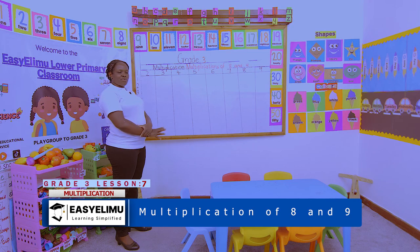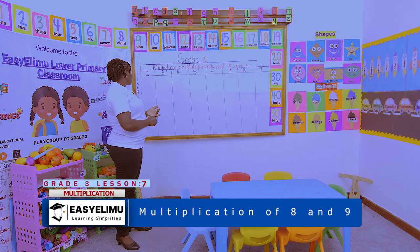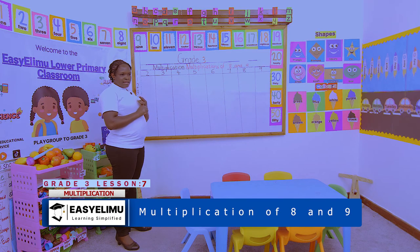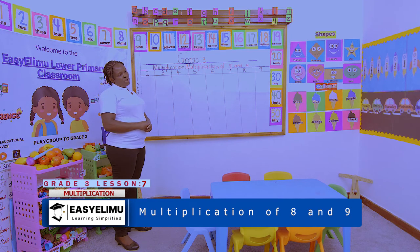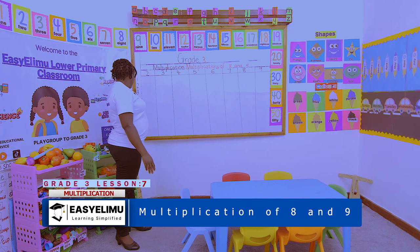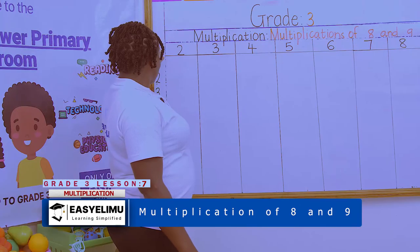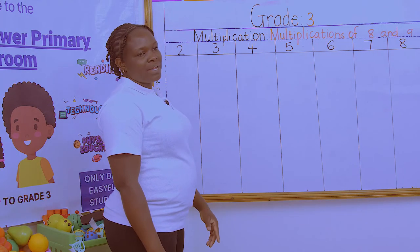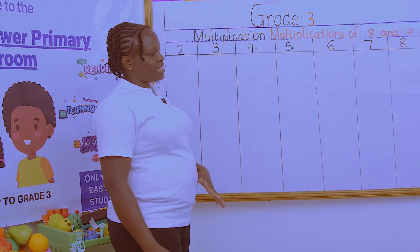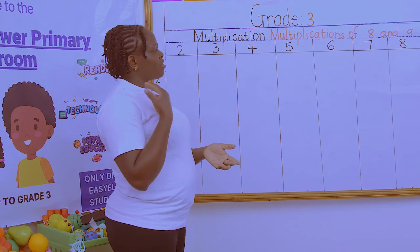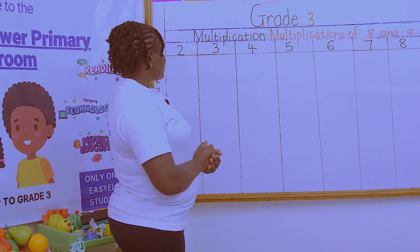What did we say the rules for multiplication are? Rule number one: any number times zero is zero. Any number times one is that number. When we come to 2, 3, 4, 5, 6, 7, 8, the answers keep changing depending on the number.